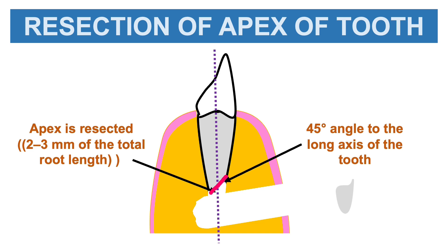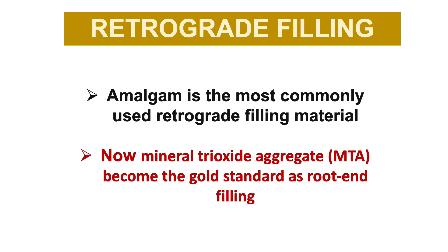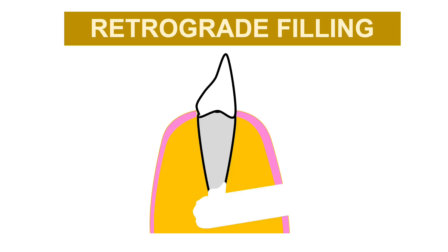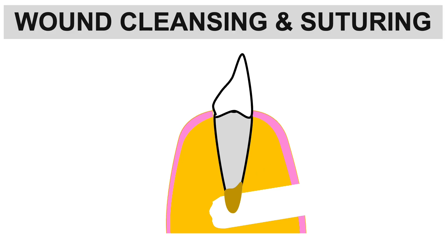After resection of the root tip, the next step is retrograde filling — filling from the apex of the tooth after removing the root tip. MTA (Mineral Trioxide Aggregate) has become the gold standard as a root-end filling material. Previously, amalgam was commonly used, but MTA is now preferred. Other materials include gold, resin composite, glass ionomer cement, and compomers.